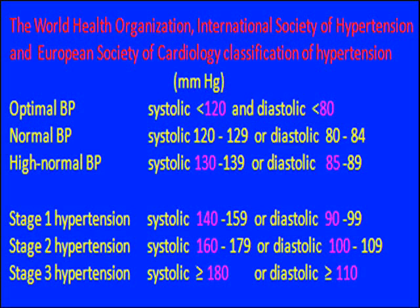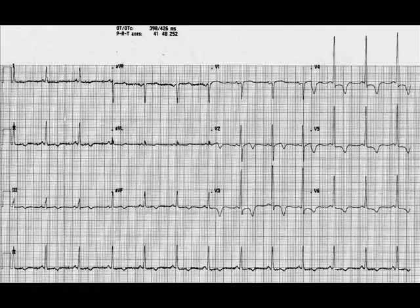The patient's ECG shows sinus rhythm and a normal frontal QRS axis, since the net QRS forces are positive in leads 1 and 2. A striking feature is the diffuse T-wave inversion in many leads. There is a deep T-wave inversion in leads V3 to V6, with a down-sloping ST segment in leads V4 to V6. The cause of T-wave inversion could be left ventricular hypertrophy or coronary artery disease.